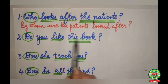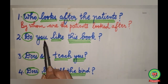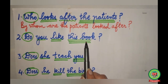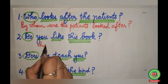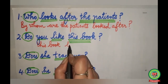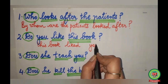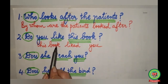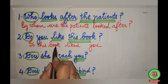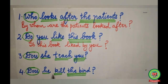The second question: 'Do you like this book?' 'Do' is the question word. 'You' is the subject — single underline. 'Like' is the verb — double underline. 'This book' will come to the beginning. 'You' will go to the end. 'This book' — 'is this book liked by you?' So the passive becomes: 'Is this book liked by you?'